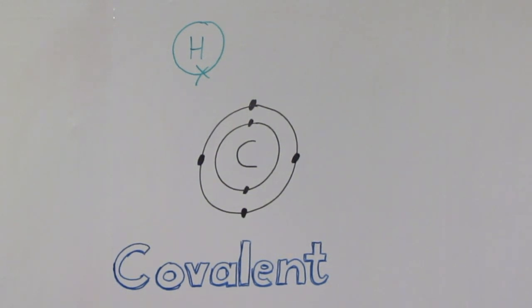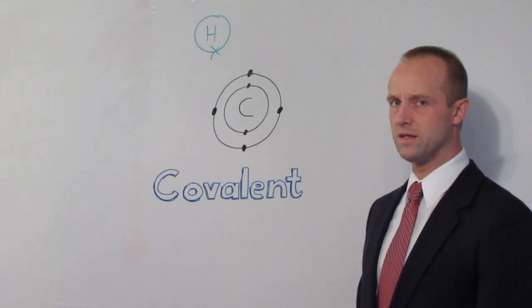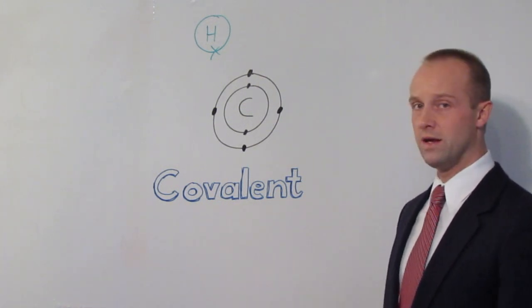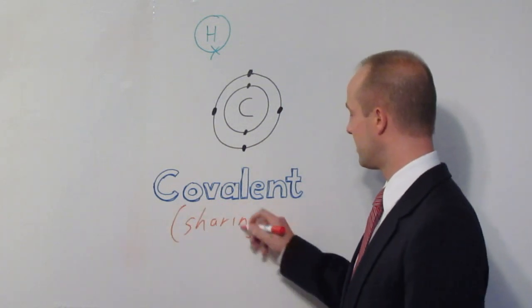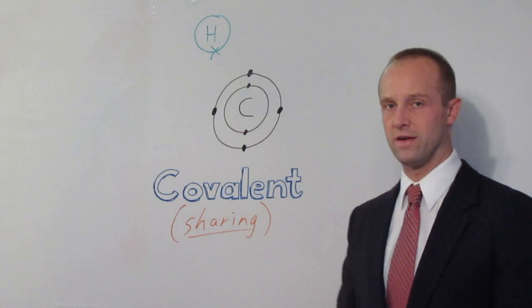Covalent bonding always happens between two non-metals, and really common ones are carbon, hydrogen and oxygen. So I'm going to deal with carbon and hydrogen here. You can see that the carbon's got four gaps in its outer shell and the hydrogen has got one gap in its outer shell. So where ionic bonding is kind of like one atom stealing an electron off the other, covalent bonding is more like the two atoms are sharing electrons.